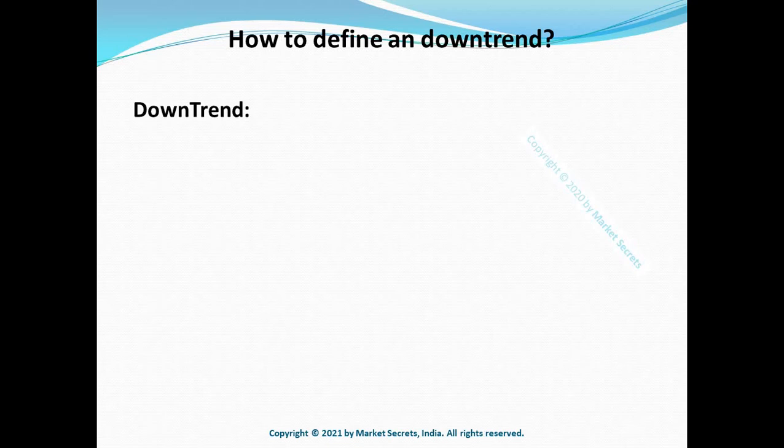In the previous sessions we learned about different types of trends and how to identify whether we are in an uptrend or whether an uptrend has officially begun. In total we have four different types of trends: an uptrend, a downtrend, a broken uptrend to the downside which is bullish consolidation, and a broken downtrend to the upside which is bearish consolidation.